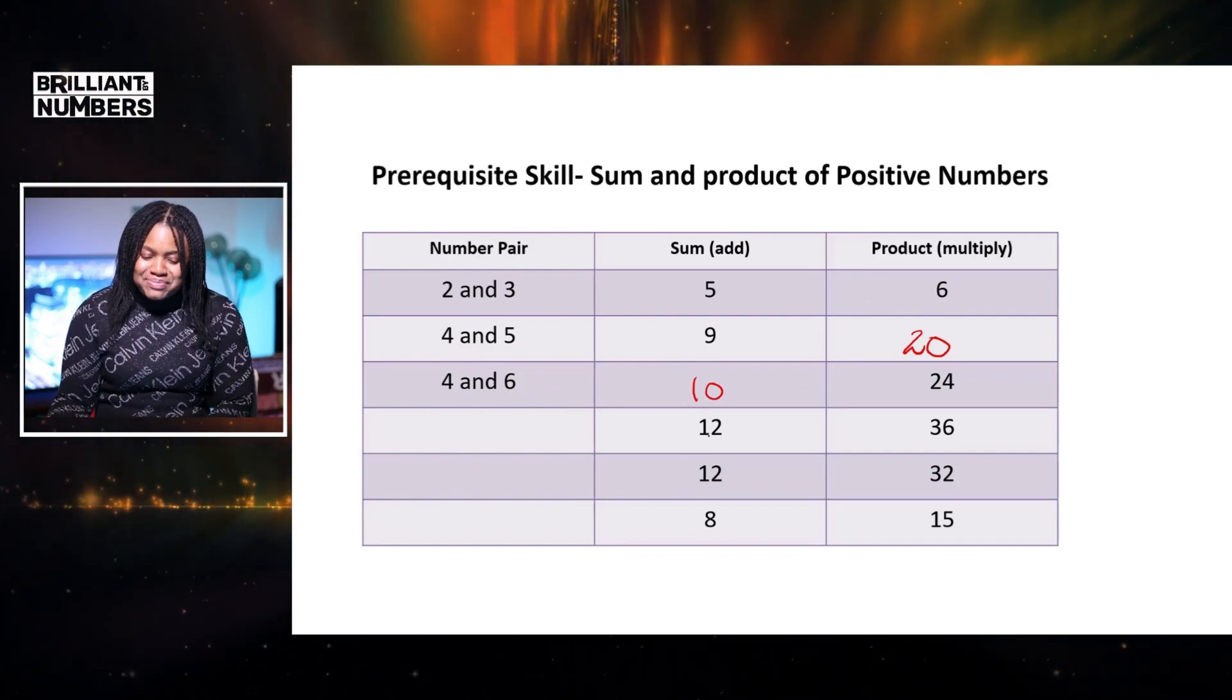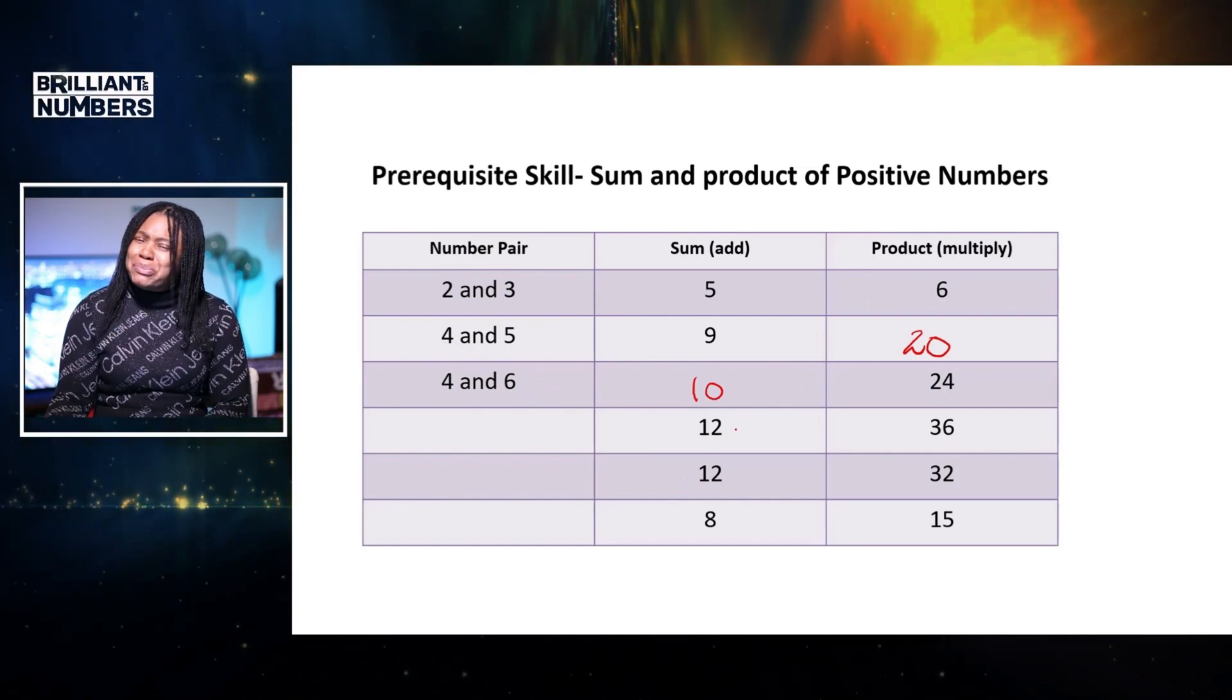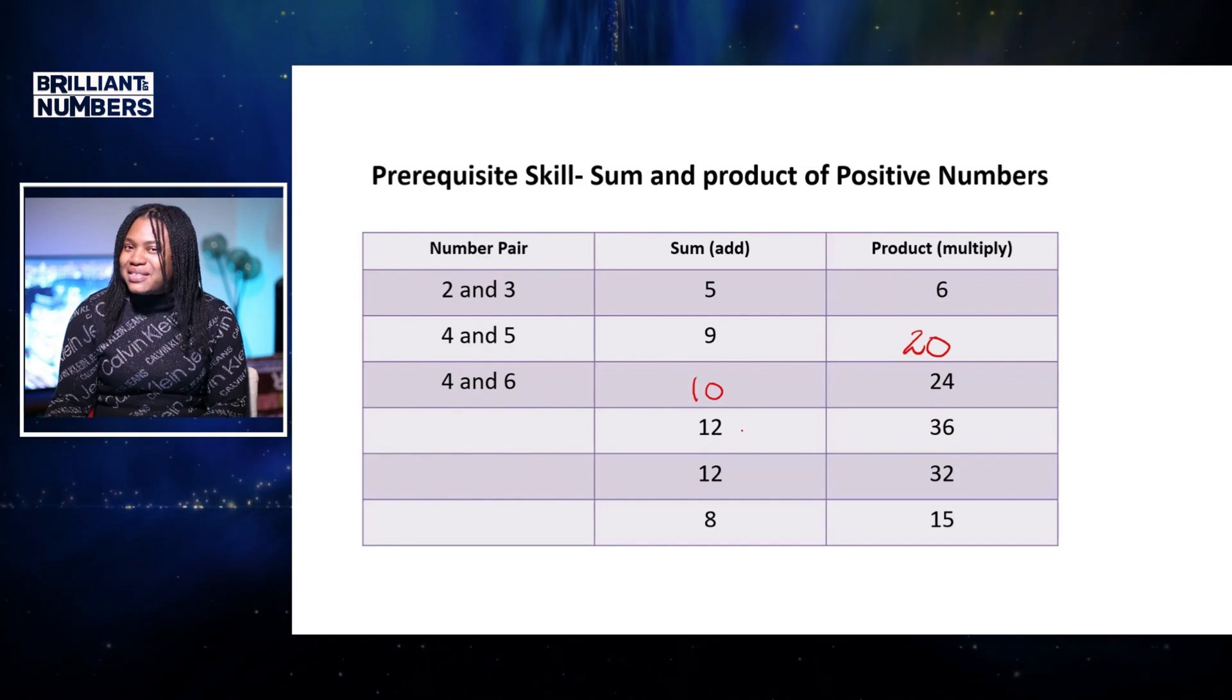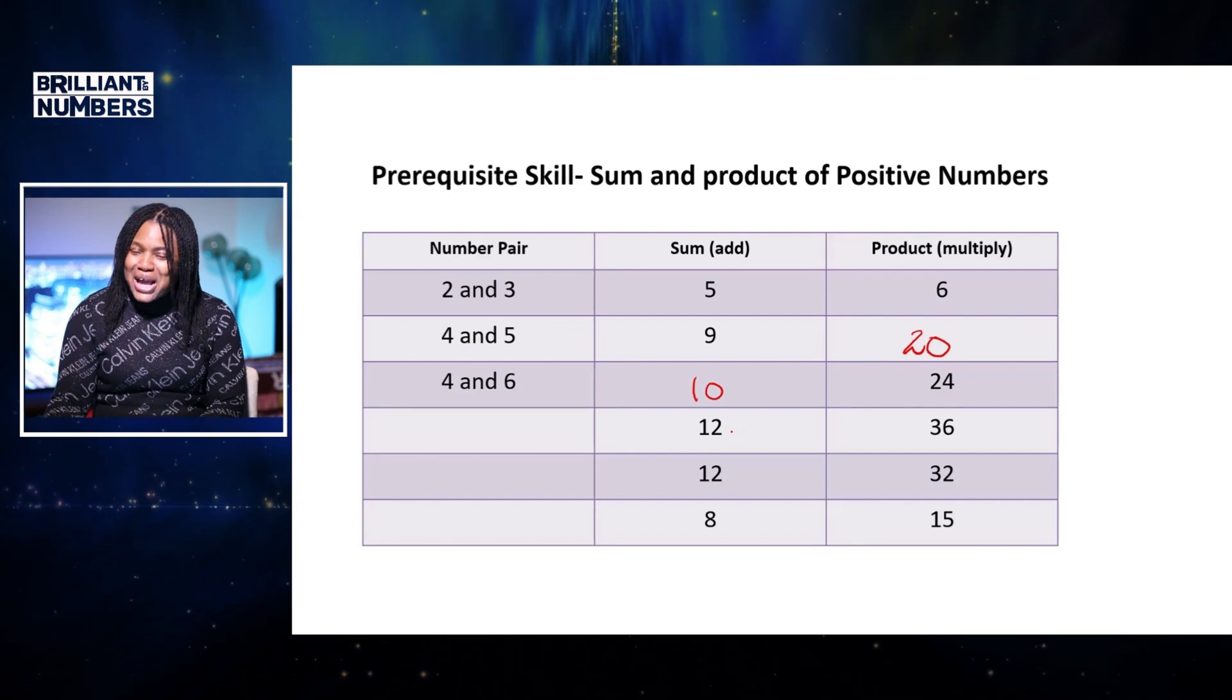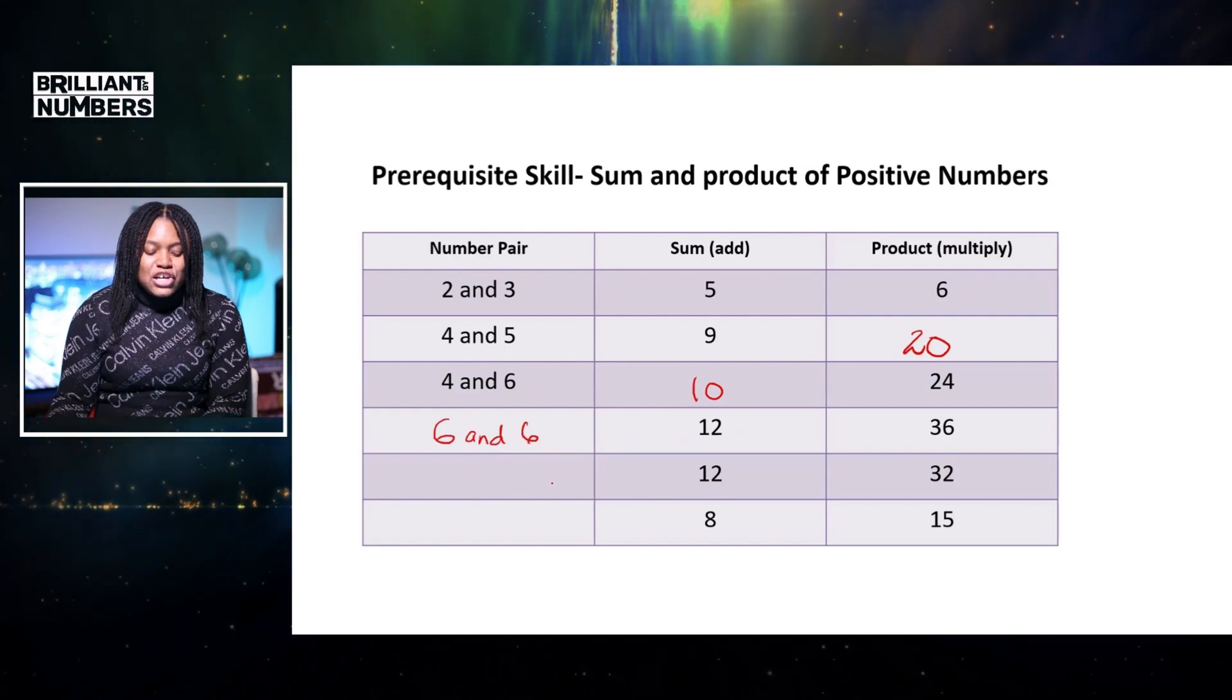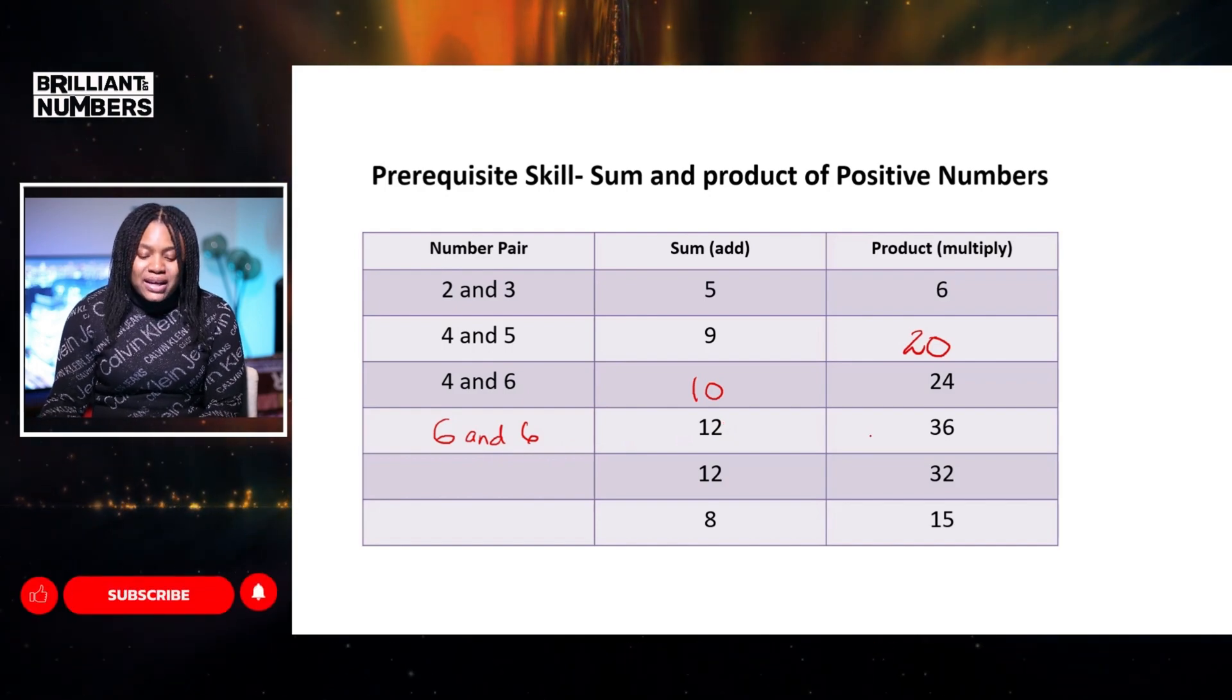Now, could you work backwards? I have 36 as my product and sum 12. What possible two numbers could add together to give 12, but when I multiply them, I get 36? Feel free to pause the video and have a think. I hope you got it right. So the answer is 6 and 6. So adding 6 and 6 together, we get 12. But multiplying them together, we get 36.